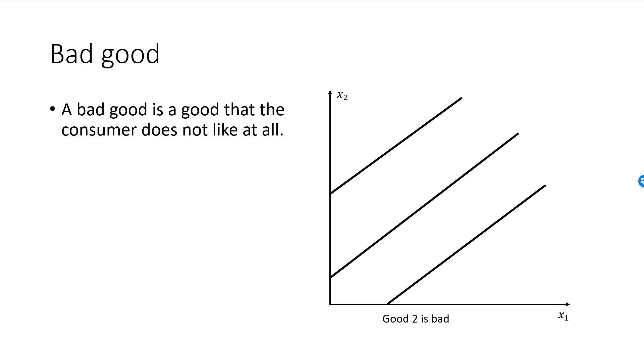The indifference curves will slope upwards if good 1 is bad and good 2 is desired, but in this case the good bundles are up to the left. If both goods are bad, then the indifference curves will be downward sloping, but better bundles are now towards the origin.